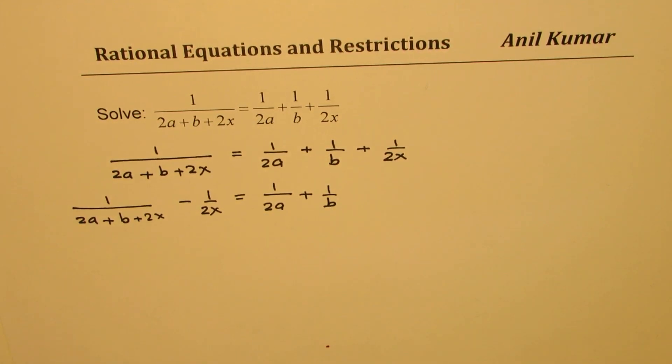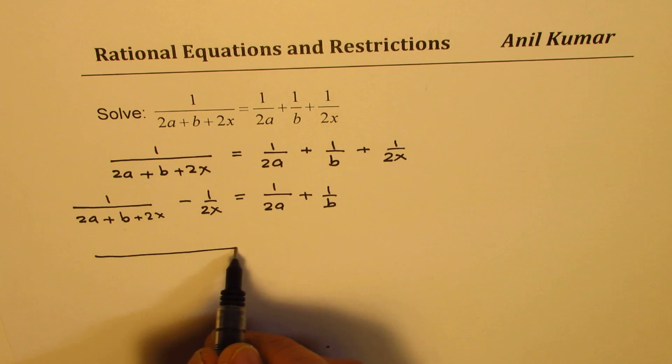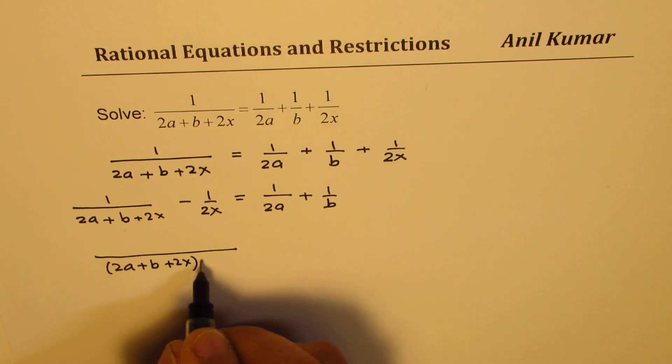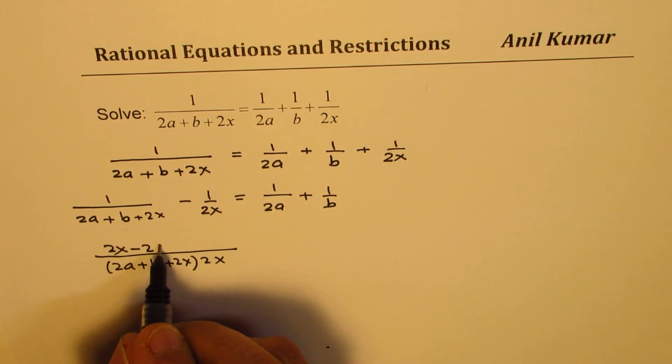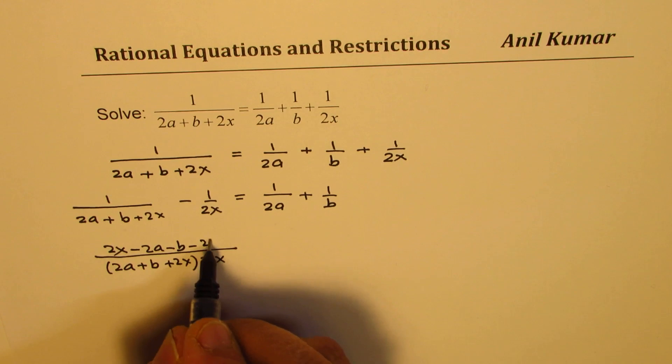Let's take the common denominator. We will take common denominator, so we get 2a plus b plus 2x times 2x. Cross multiply. So this gets here, we get 2x minus times all these terms, we get minus 2a minus b minus 2x.